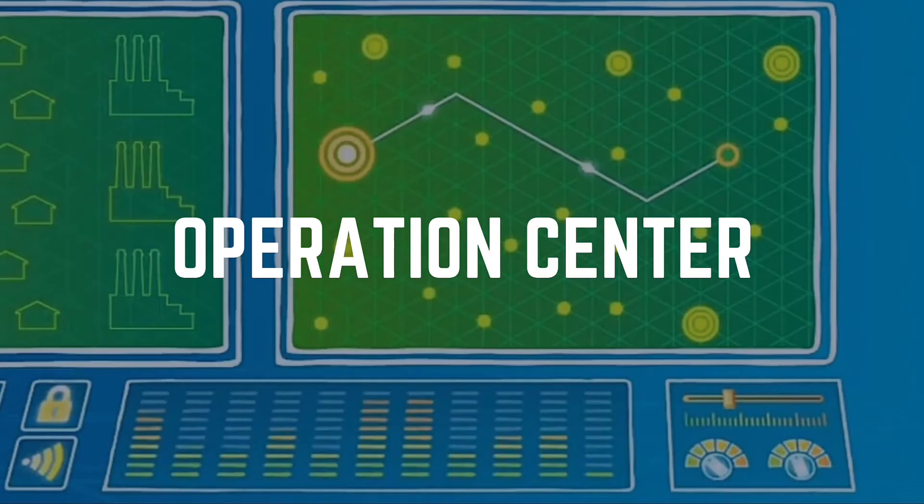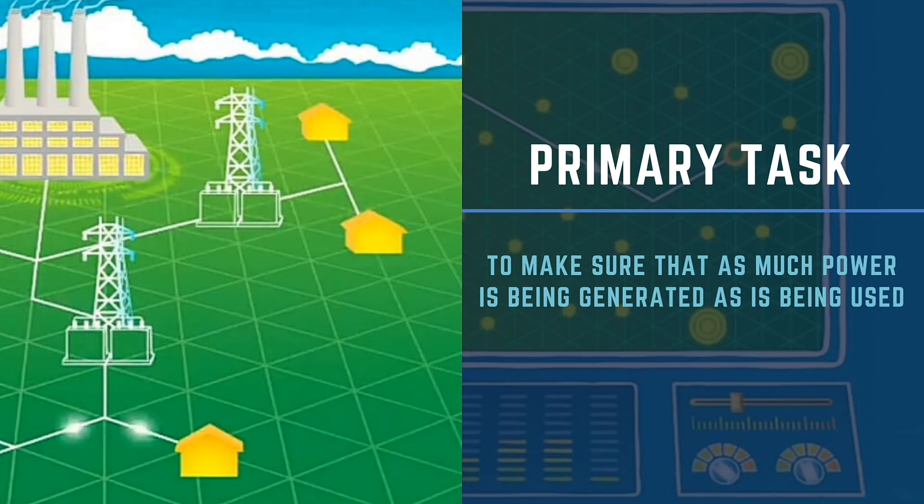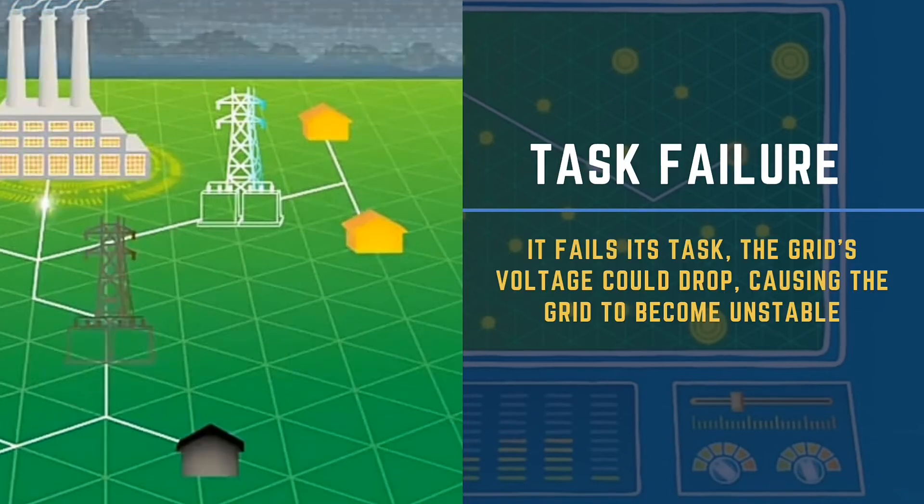Today's grid operators have very little control over the system. Their primary task is to make sure that as much power is being generated as is being used. If it fails this task, the grid's voltage could drop, causing the grid to become unstable.